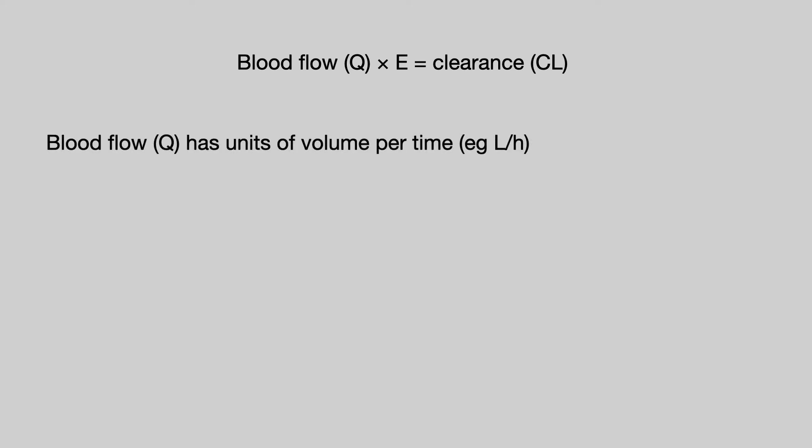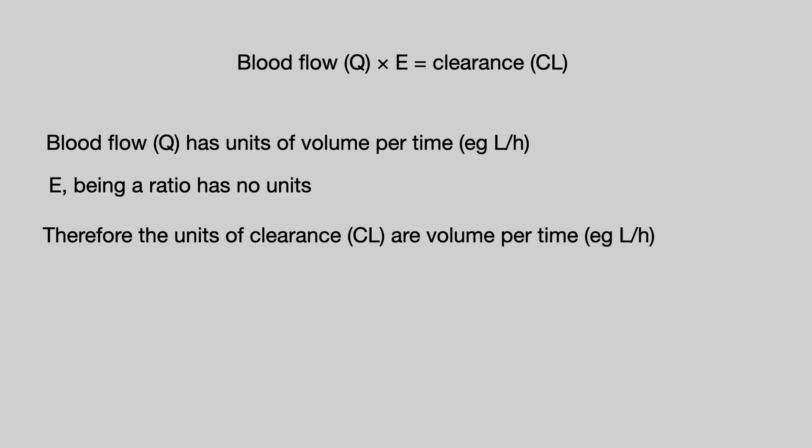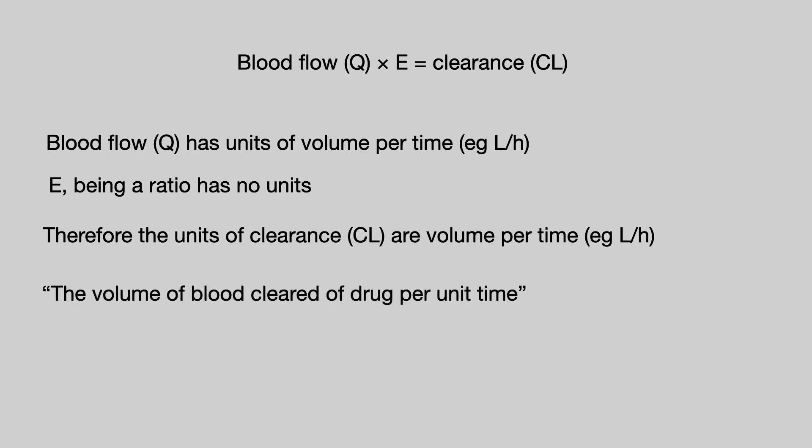That brings us to clearance: blood flow, depicted by Q, multiplied by the extraction ratio, equals clearance. Blood flow has units of volume per time, for example litres per hour. The extraction ratio is a ratio so it has no units, and therefore clearance has units of volume per time, such as litres per hour. You may see this definition of clearance: the volume of blood cleared of drug per unit time. In terms of the information just given, that definition now makes a little more sense.